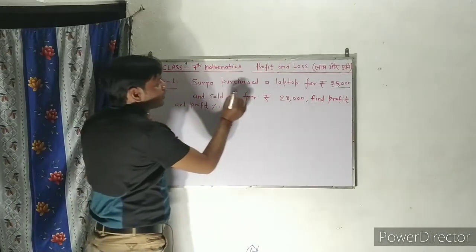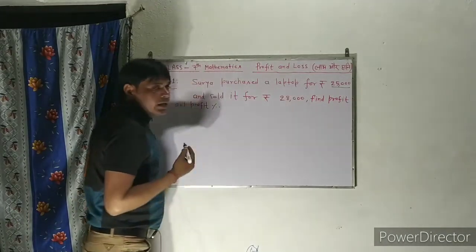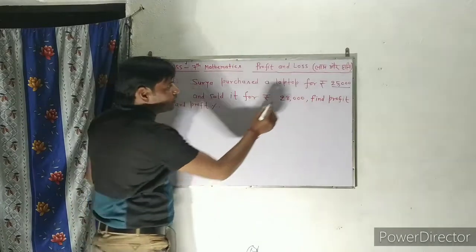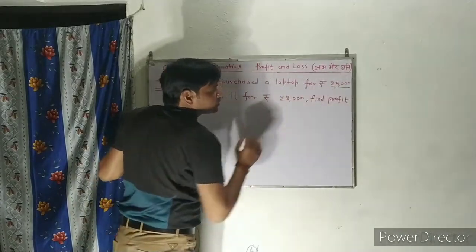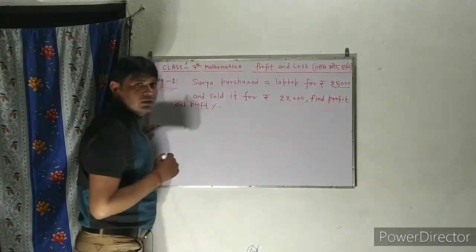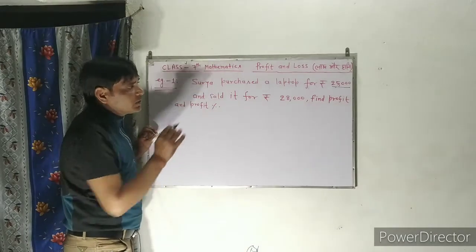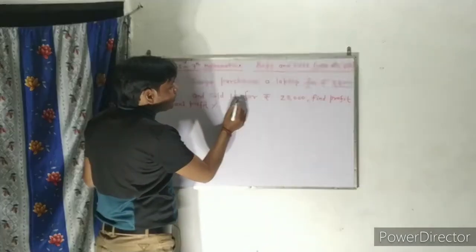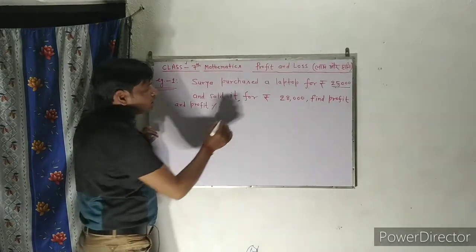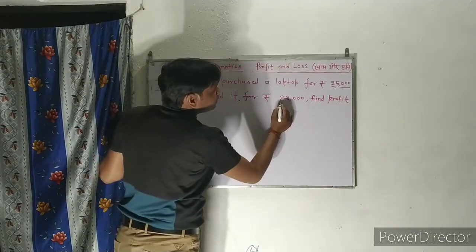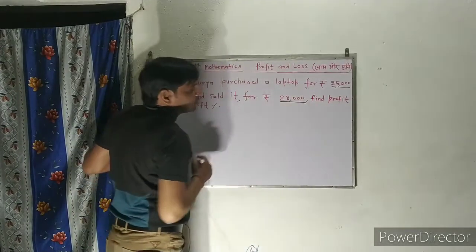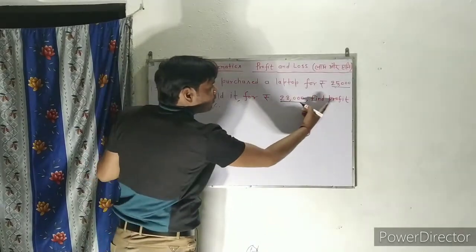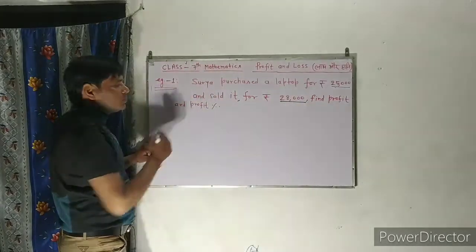Surya purchased a laptop — Surya एक laptop purchase करता है, खरीदता है — ₹25,000 का. And sold it — और इसे बेज देता है — ₹28,000 में. Find profit and profit percent.